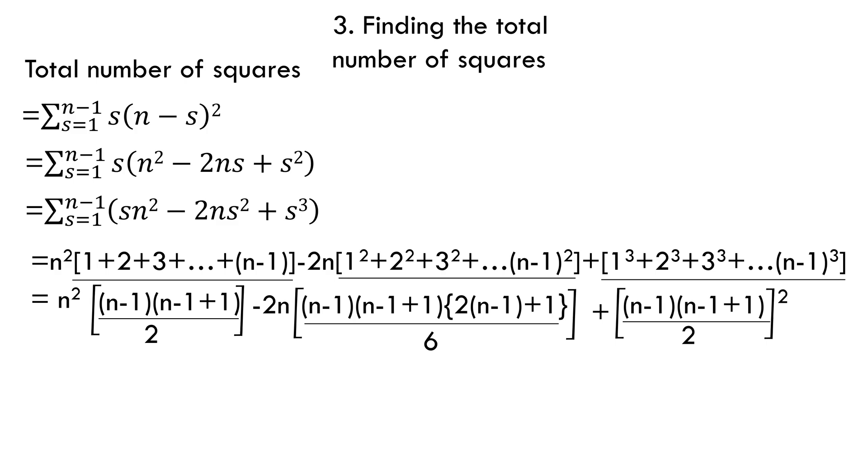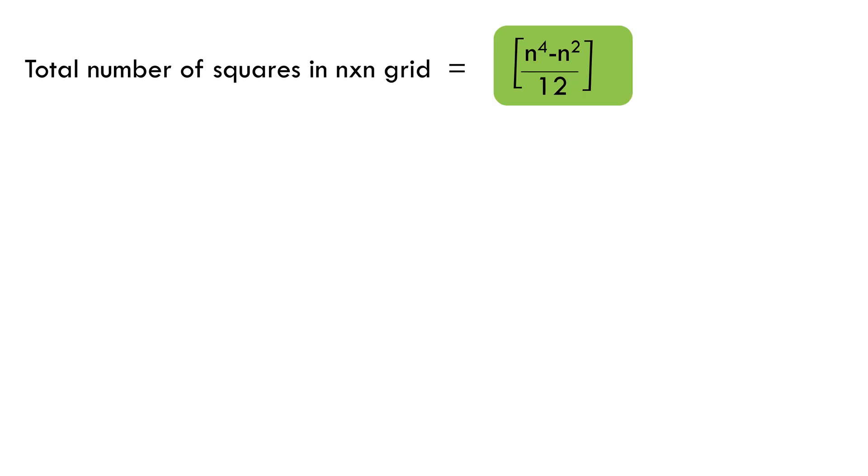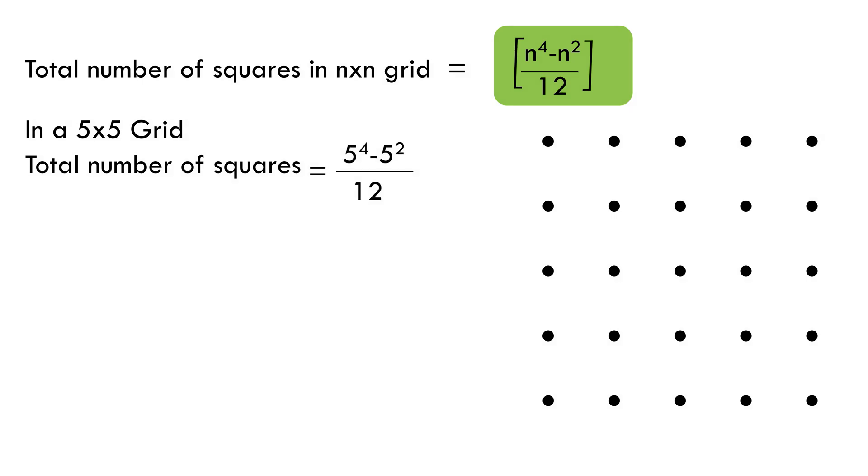And we'll solve this to get the total number of squares to be (n to the power 4 minus n square) by 12. Now, if we want to get the total number of squares in a 5 by 5 grid, it would be equal to (5 to the power 4 minus 5 square) by 12, which will ultimately give us total number to be 50.